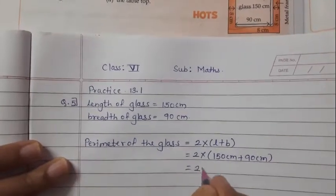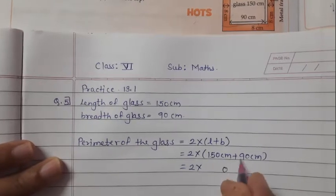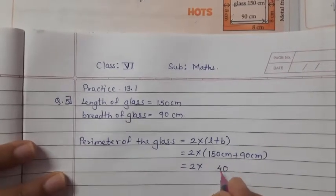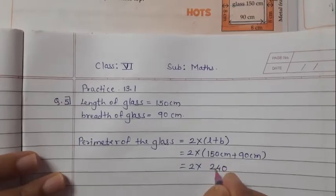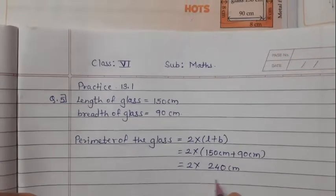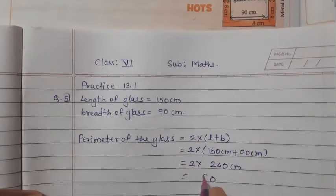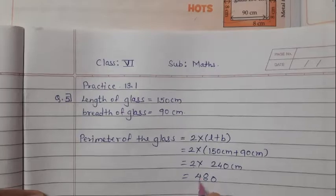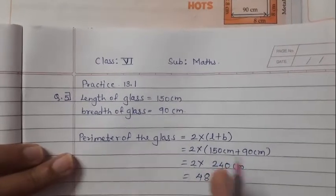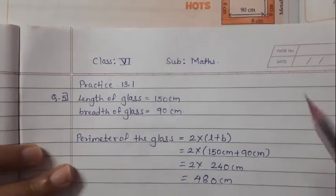Now 150 plus 90: 0 plus 0 is 0, 9 plus 5 is 14, carry 1, so 240 cm. Then 240 into 2: 2 zeros are 0, 2 fours are 8, 2 twos are 4. So the perimeter of the glass is 480 cm.